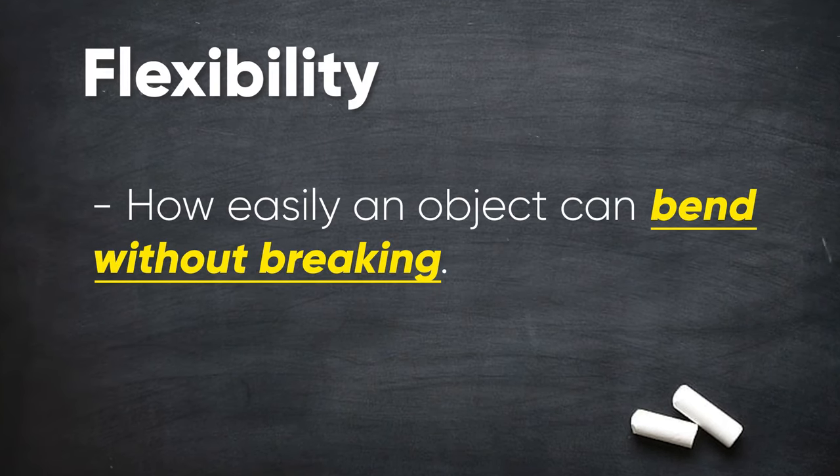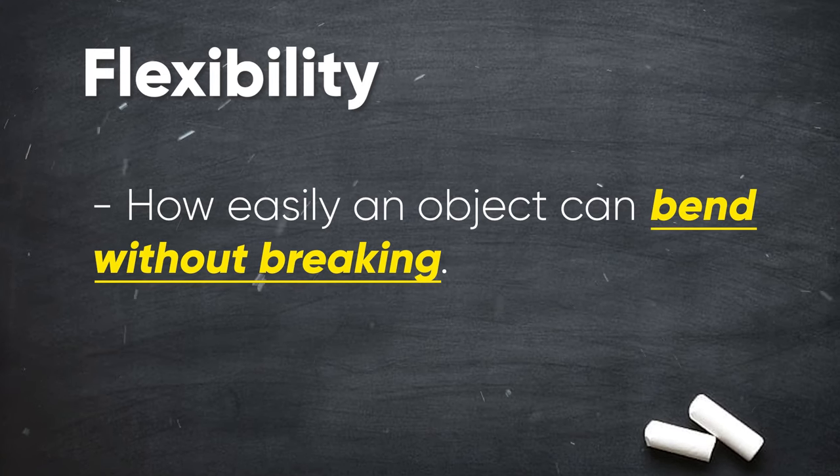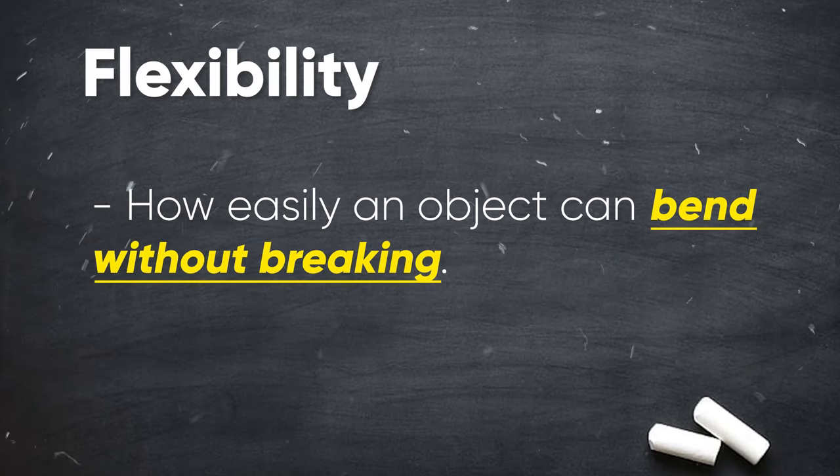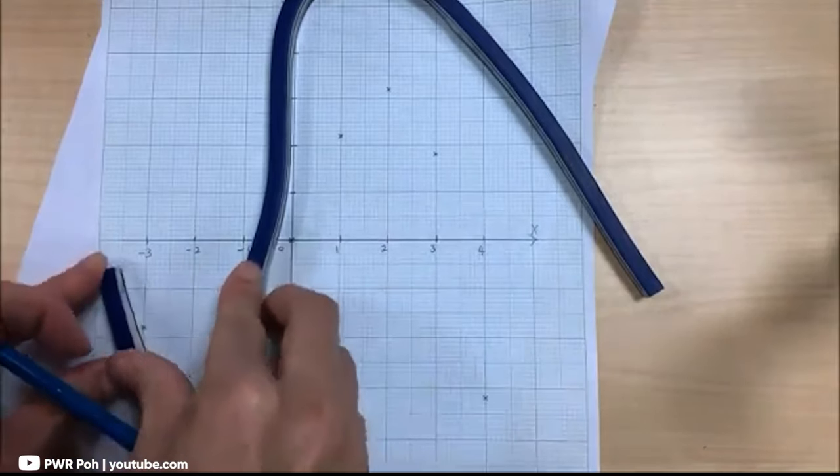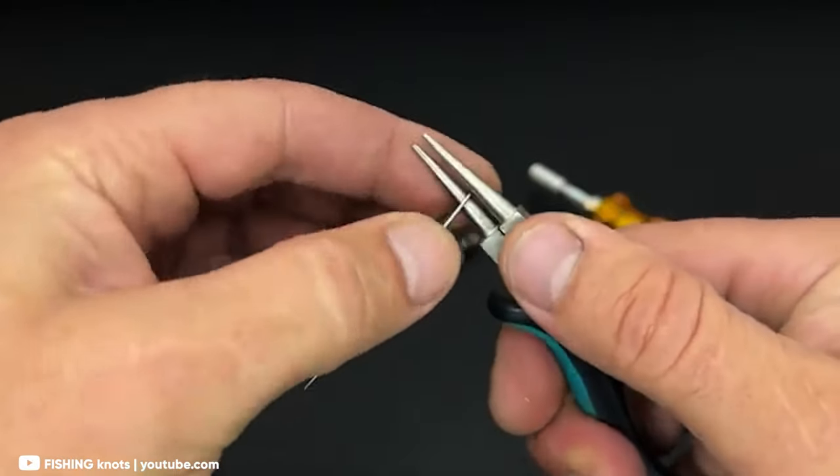Next we have flexibility. This is how easily an object bends without breaking. Ability of a material to bend but without breaking. Take these plastic ruler and a piece of wire as examples. They are flexible because they can be bent without snapping or breaking.